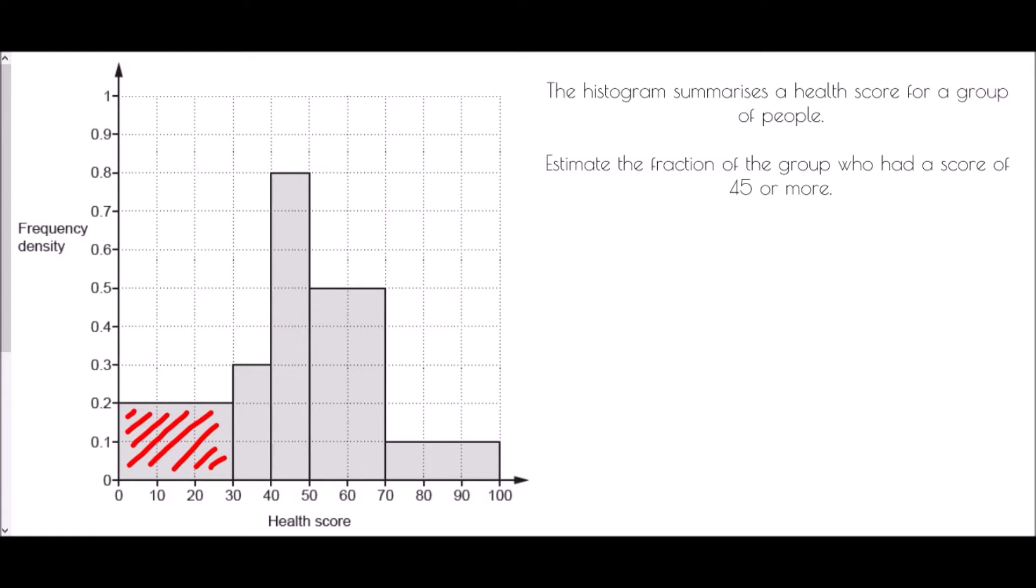So we're going to find the area of each bar in order that we can find the total frequency. The first bar has a width of 30 and a height of 0.2 and so we're going to have 30 times 0.2 so that is 6. Our first group has 6 people in it.